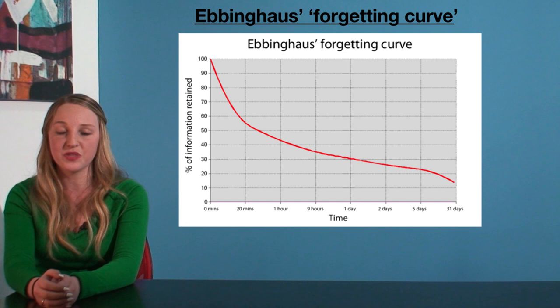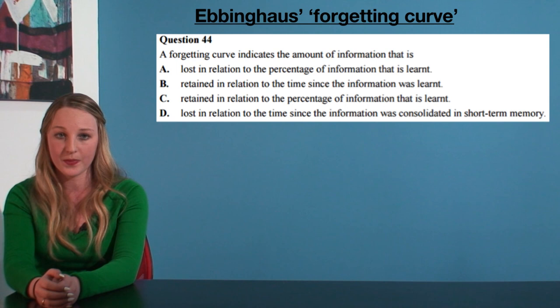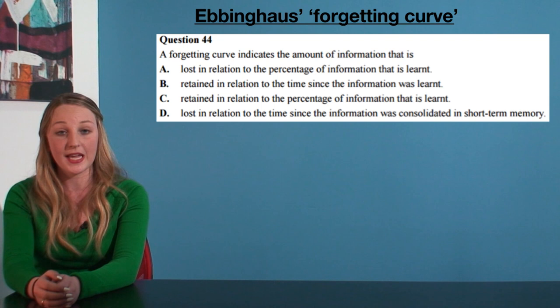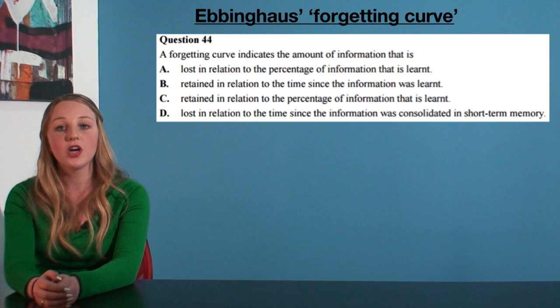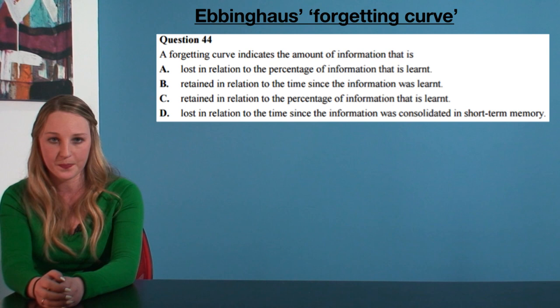Here is one from the 2013 VCAR exam. It reads: A forgetting curve indicates the amount of information that is — A: Lost in relation to the percentage of information that is learnt. B: Retained in relation to the time since the information was learnt. C: Retained in relation to the percentage of information that is learnt. Or D: Lost in relation to the time since the information was consolidated in short-term memory. What do you think?